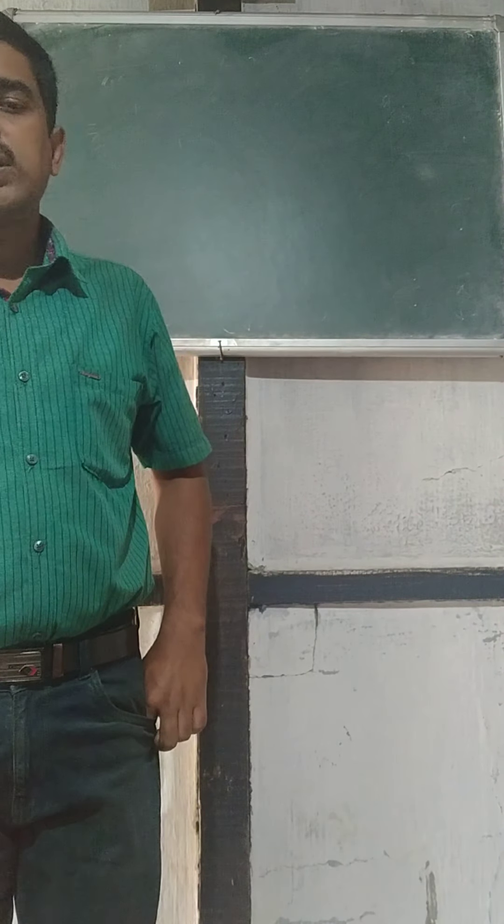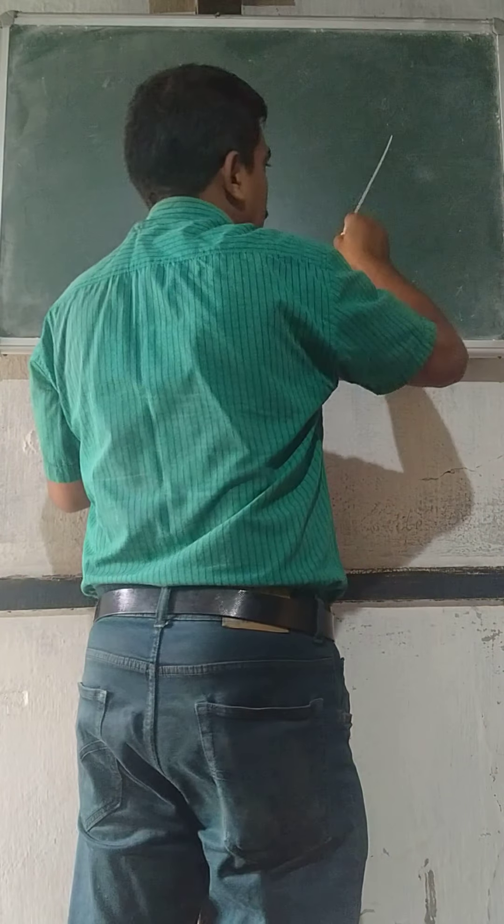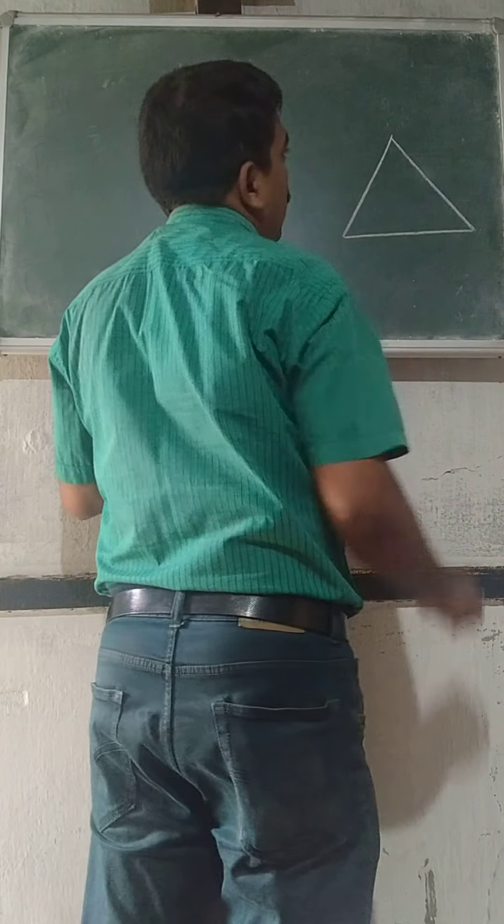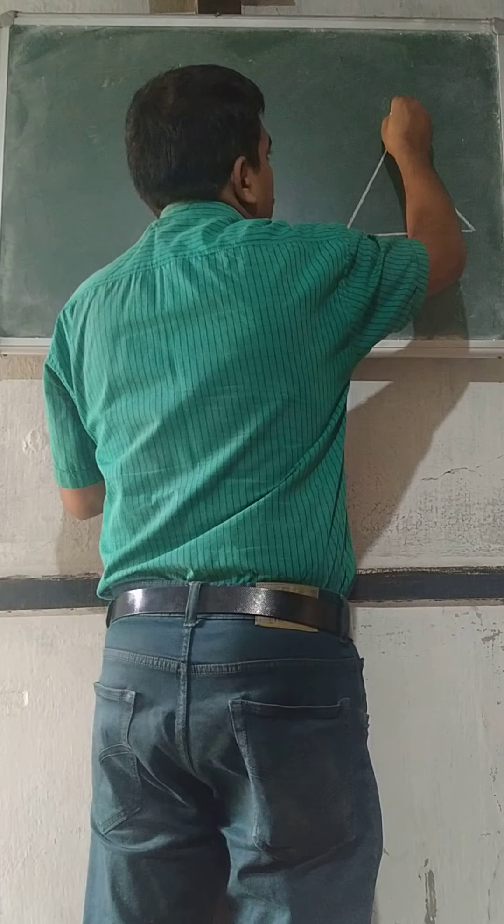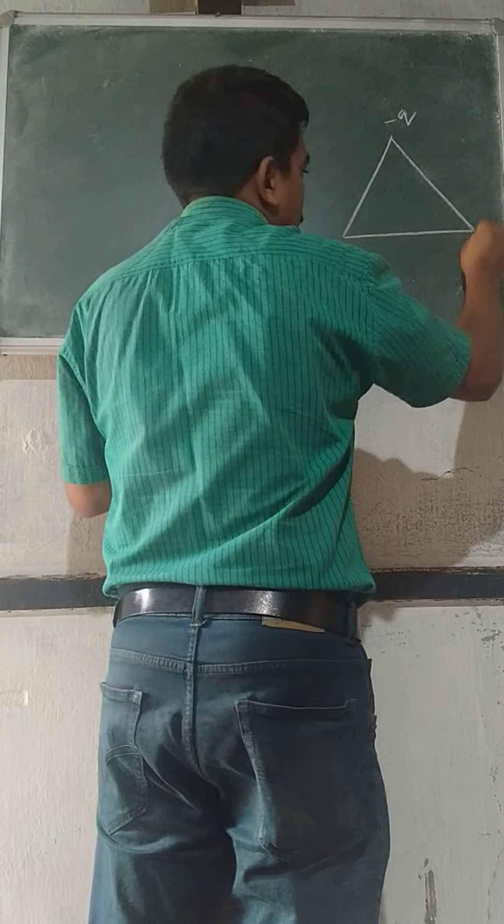So, in your textbook question number 1.7, it is given that you have minus Q, plus Q, plus Q charges.